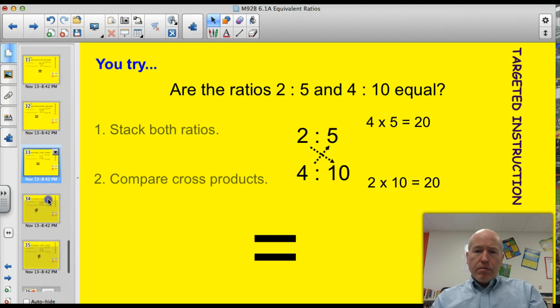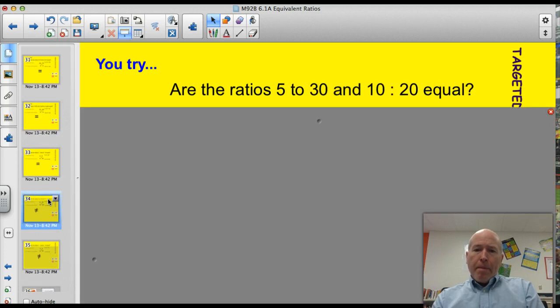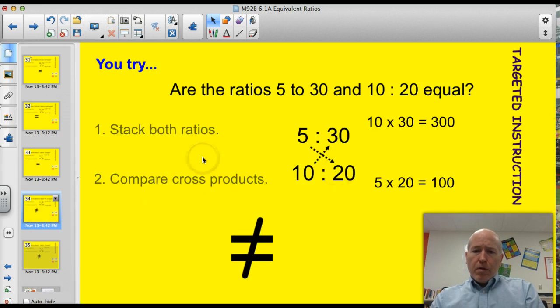Try another one. Did you really stop the video? Go back. Pause. Do this problem. Alright. Let's see how you did. Are the ratios 5 to 30 and 10 to 20 equal? Well, stack the ratios. 5 to 30, 10 to 20. And let's compare the cross products. 10 times 30, that's 300. 5 times 20, 100. Survey says not equal.